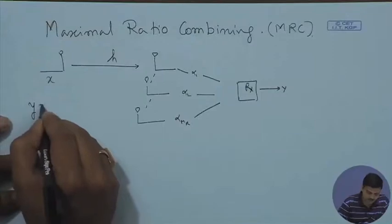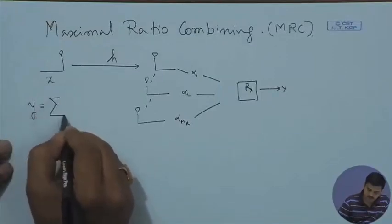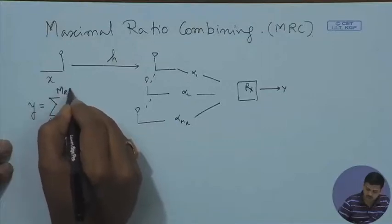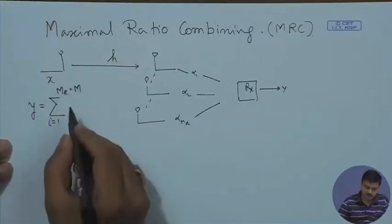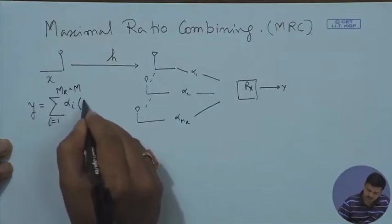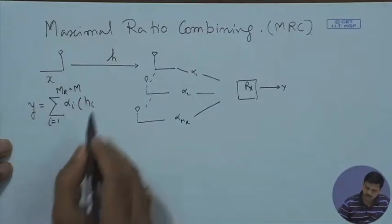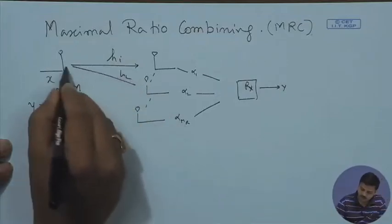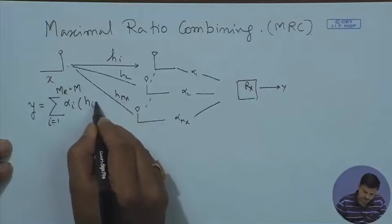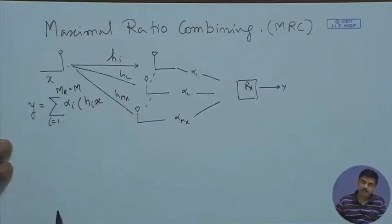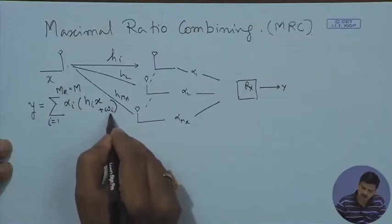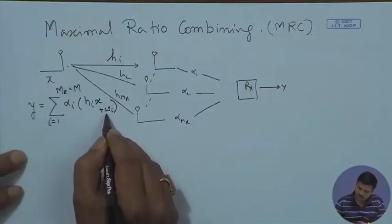The output Y can be written as the sum from i equals 1 to MR of alpha_i times H_i — the ith link H_1, H_2, up to H_MR — times X, which is transmitted, plus W_i, where W_i is the noise due to that particular branch.